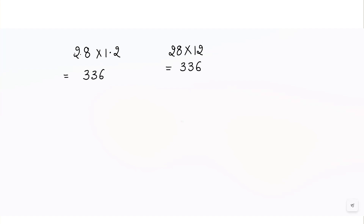After that we write the same number, but we need to put the decimal point in the answer as well. For that, we need to count how many digits are there after the decimal point in the question. There are one and two digits in total, so in the answer there should also be two digits after the point. If I put a point here, I have two digits after the point in the answer as well.